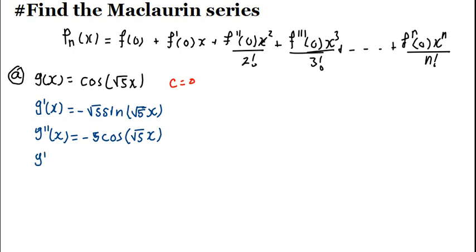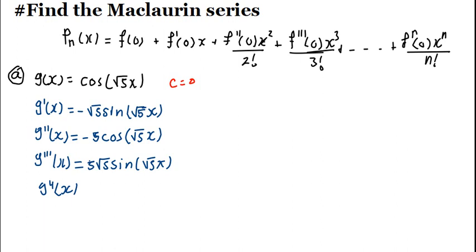The third derivative G triple-prime of X is going to be positive 5√5·sin(√5·X). Then the fourth derivative is going to be equals to 25·cos(√5·X). Always remember to multiply by the derivative of the angle at each step.